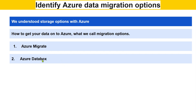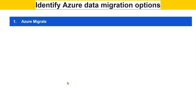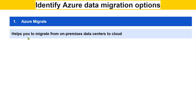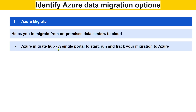Now let's understand each of them in detail. What is Azure Migrate? The word migrate means transform. Azure Migrate helps you to migrate from on-premises data centers to cloud. Azure Migrate is a hub or portal to start, run, and track your data migration to Azure — a single point portal where you can start, run, and track your data migration from on-premise to cloud.